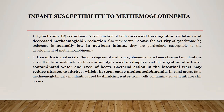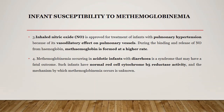Infants who are susceptible to methemoglobinemia can have the following reasons for this condition. Cytochrome b5 reductase deficiency happens because the activity of this enzyme is normally low in newborn infants, making them susceptible to methemoglobinemia, with increased hemoglobin oxidation and decreased methemoglobin reduction. Use of certain toxic materials such as aniline dyes used for diapers, and ingestion of nitrate-contaminated water or beans — bacterial action in the intestinal tract reduces nitrate to nitrite, which in turn causes methemoglobinemia. In rural areas, infants drinking water contaminated with nitrate can develop fatal methemoglobinemia.